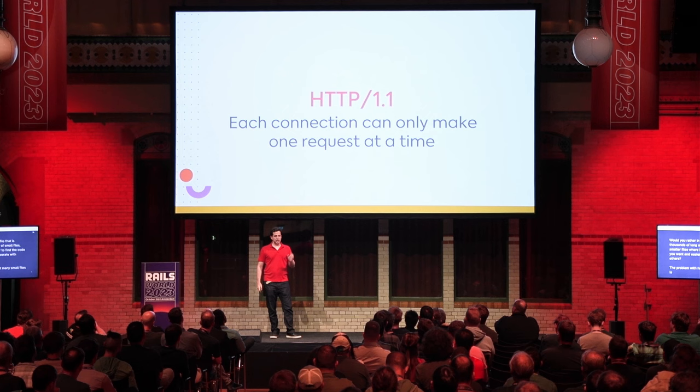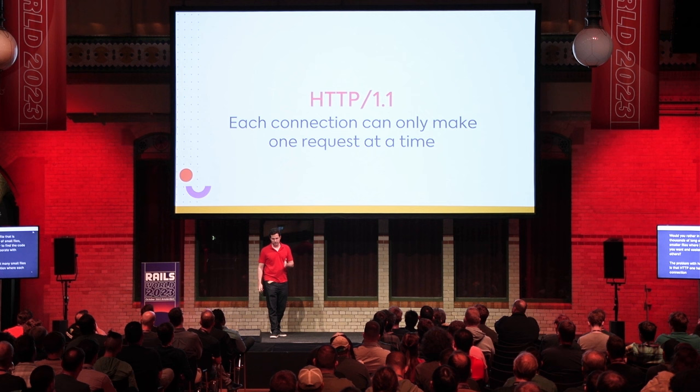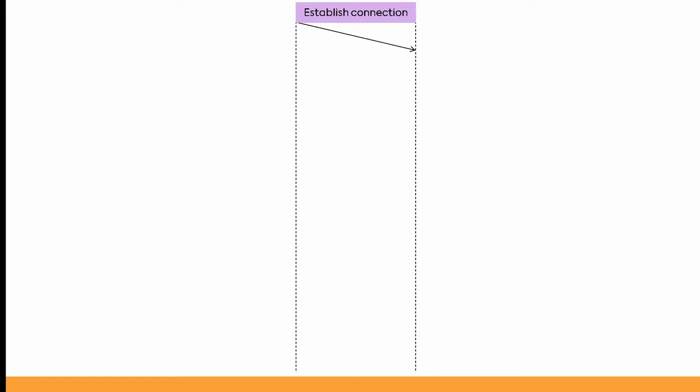The problem with having that many small files is that HTTP 1 had a limitation where each connection could only make a single request at a time. So imagine you have four files: you establish the connection, you request the file, the server finds it and sends it back. Then you do it again and again before closing the connection.